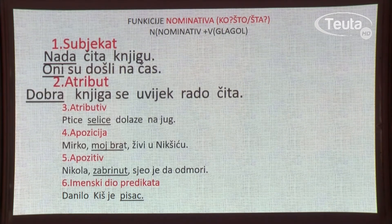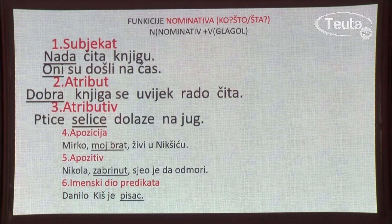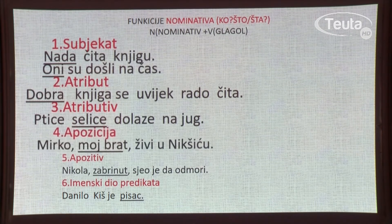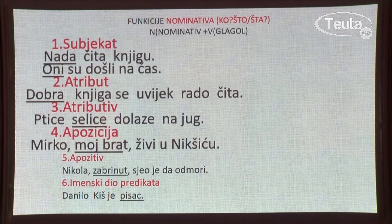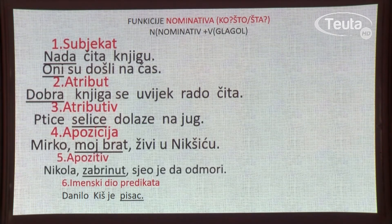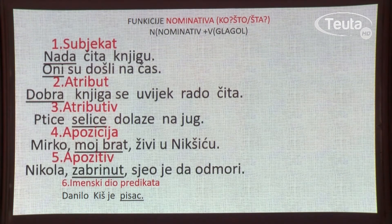Nominativ ima također funkciju atributa. Uz imenicu knjiga stoji pridjev koji je u nominativu. Zatim atributiv — ptice selice; imenica koja dopunjuje prethodnu imenicu i također je nominativ. Ko? Ptice selice. Apozicija je pojašnjenje koje je dodatak subjektu i također je u nominativu — ko? Moj brat. Apozitiv: Nikola, zabrinut, sjeo je da odmori. Zabrinut uz imenicu Nikola određuje osobinu i također je u nominativu.